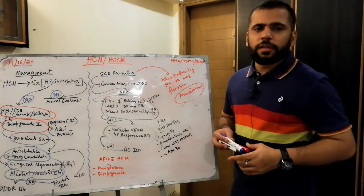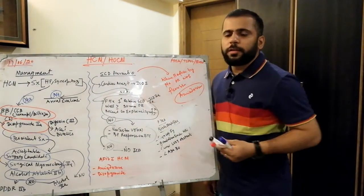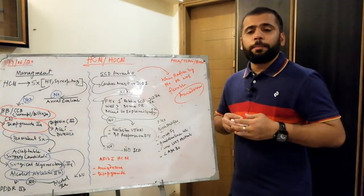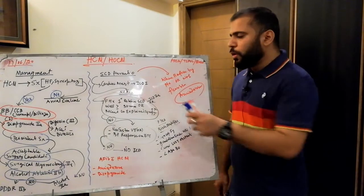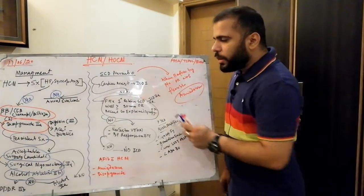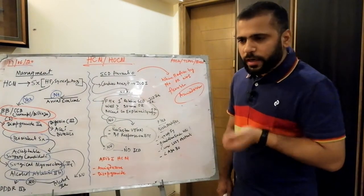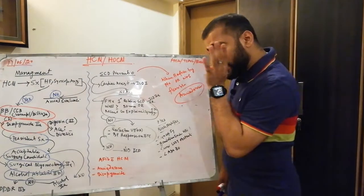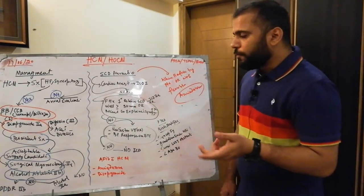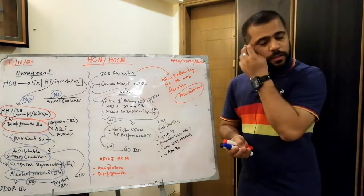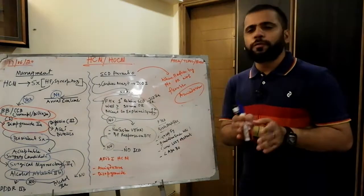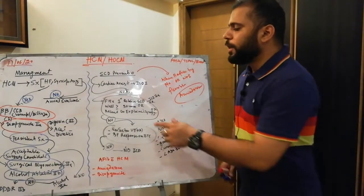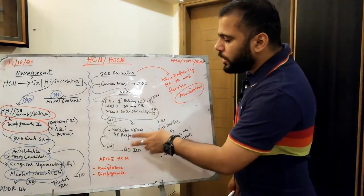If there is no history of cardiac arrest, risk stratify with three questions. First: family history of sudden cardiac death in a first-degree relative (parents or siblings) — if positive, ICD is class 2A. Second: septal thickness greater than 30 mm on echocardiography — ICD is class 2A. Third: recent unexplained syncope associated with ventricular arrhythmias — if confirmed arrhythmic, place ICD.